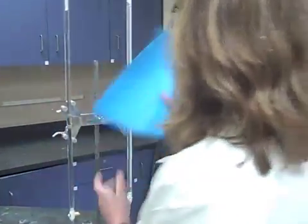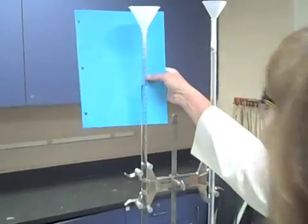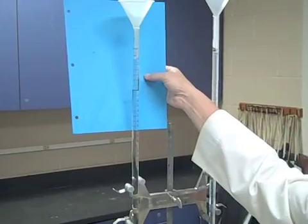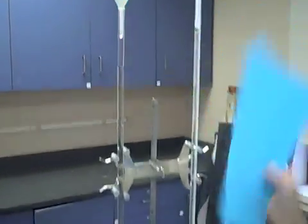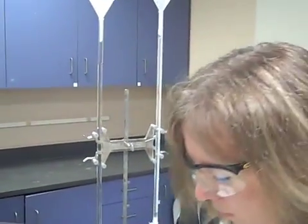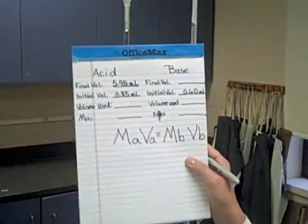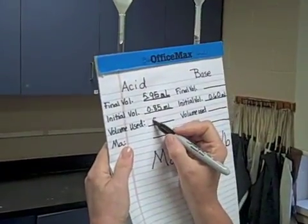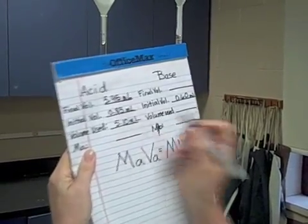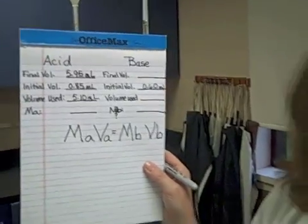I'm going to take a reading now. And my reading tells me that I'm at 5.95. 5.95 as my final volume. So that means that I am using 5.10 milliliters of the acid in this titration.